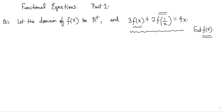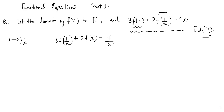If we replace x with 1/x in the original equation, we get 3·f(1/x) + 2·f(x) = 4/x. Now we have two equations, both containing f(x) and f(1/x) as variables. Our job is simply to eliminate f(1/x).